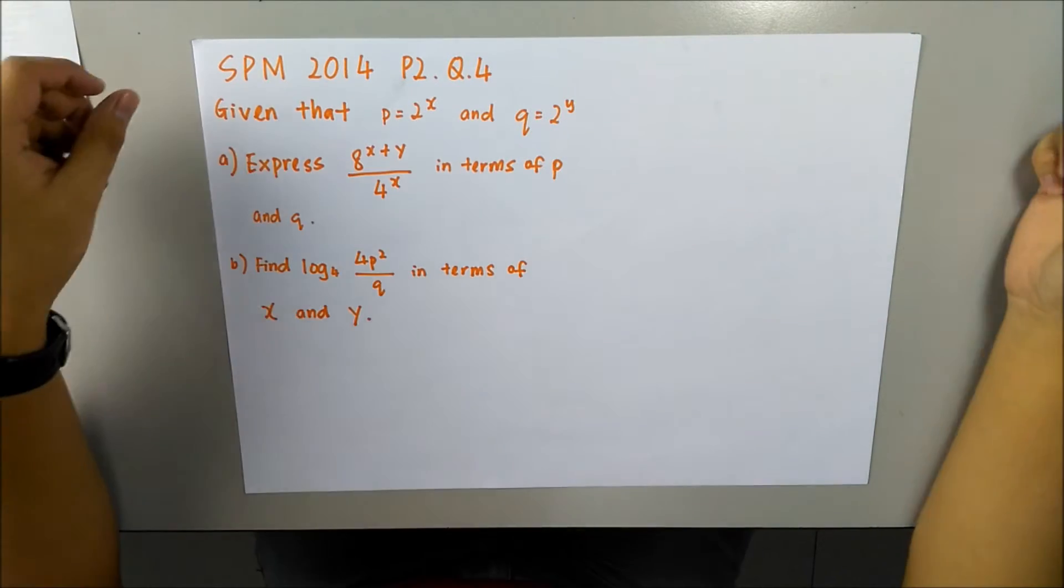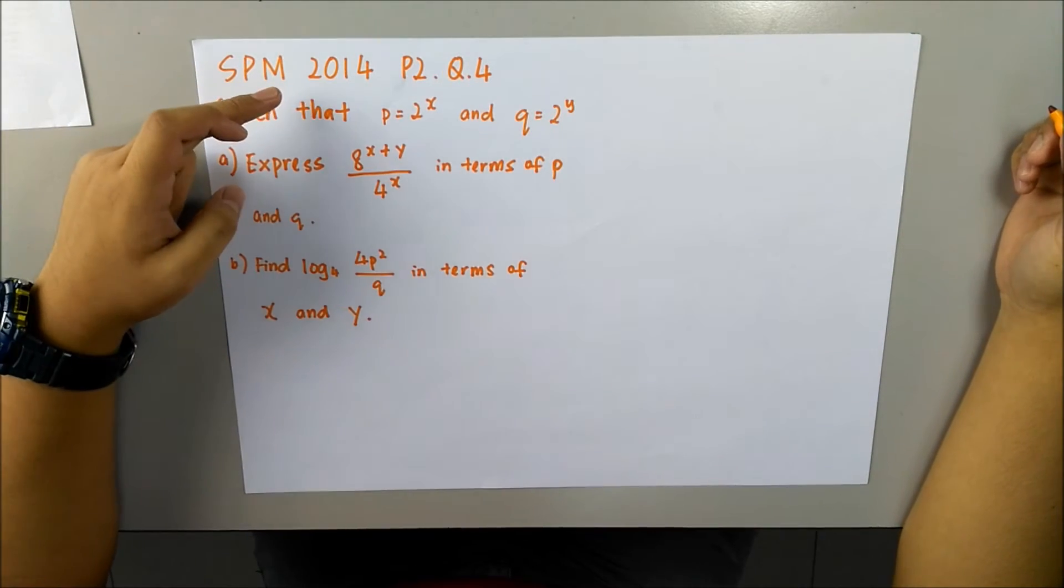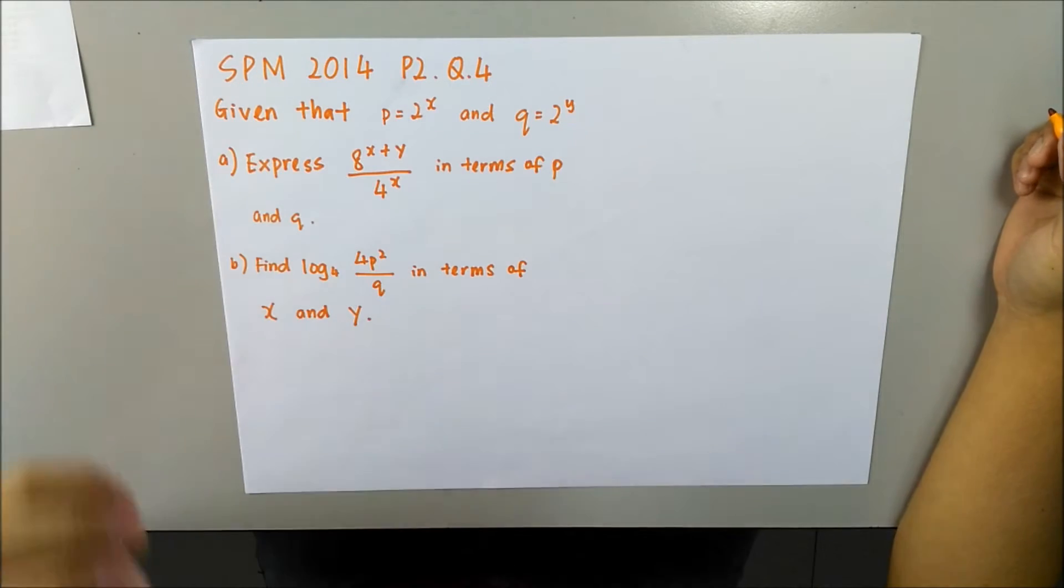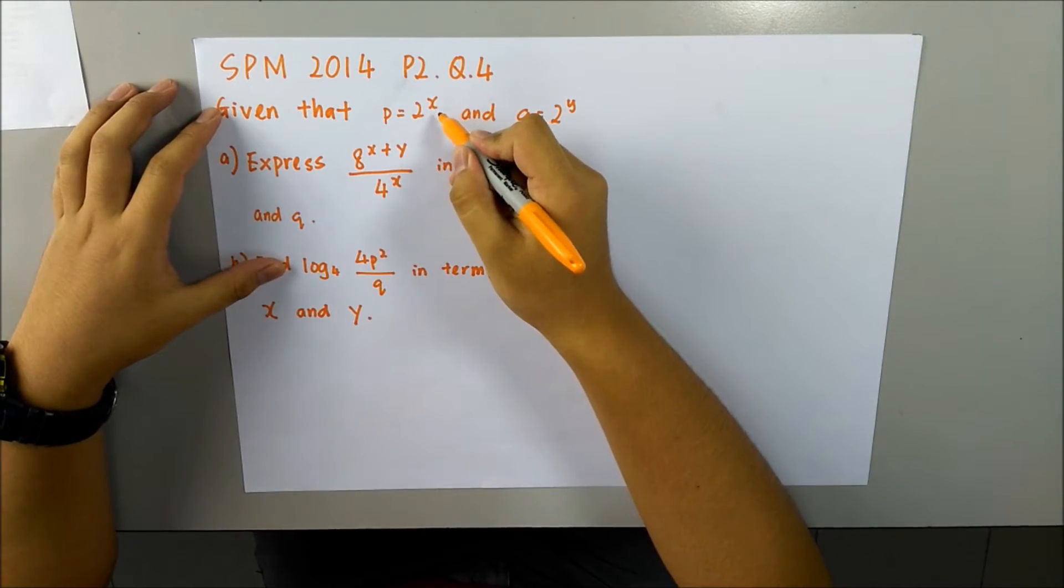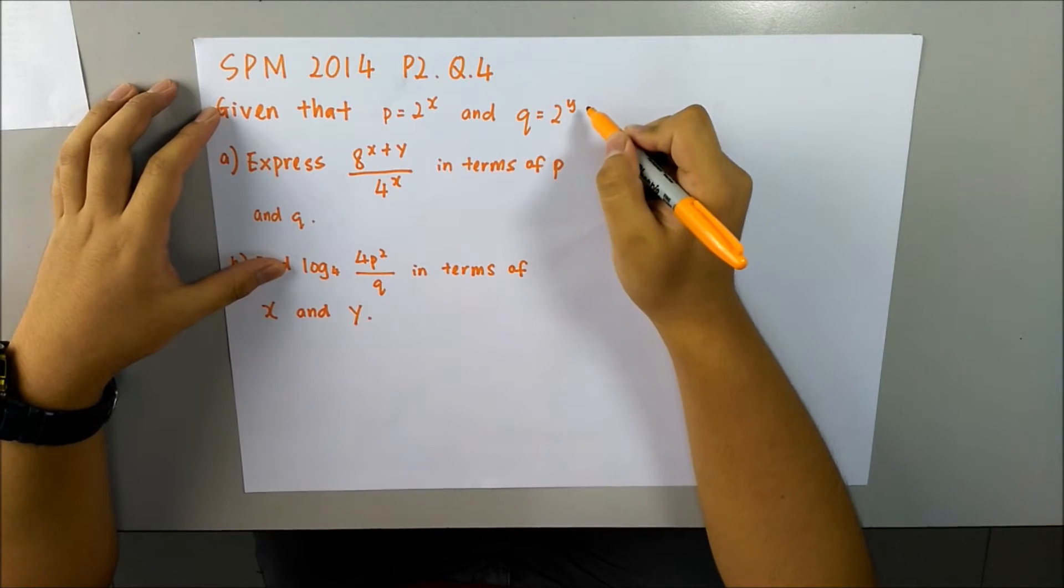Hello guys, so today we are going to talk about SPM 2014, paper 2, question number 4. For this question, they are given p equals 2 to power of x and q equals 2 to the power of y.